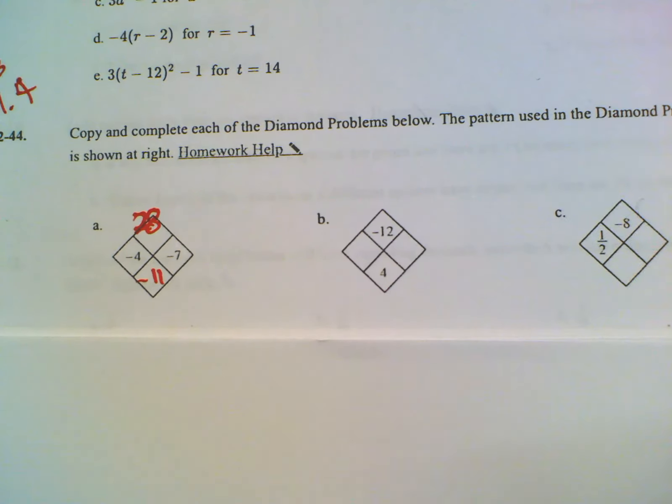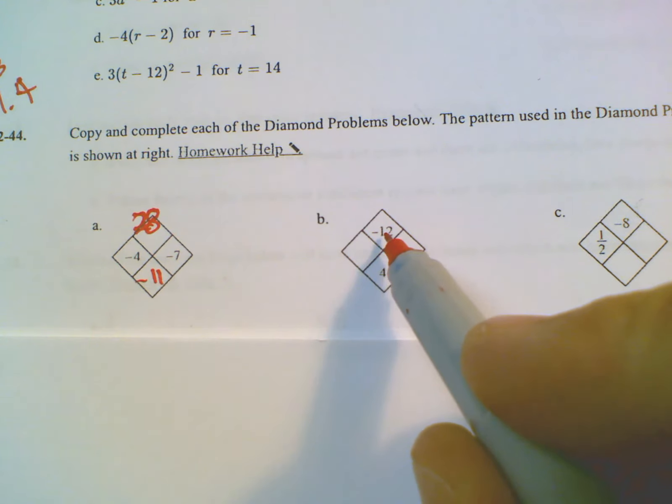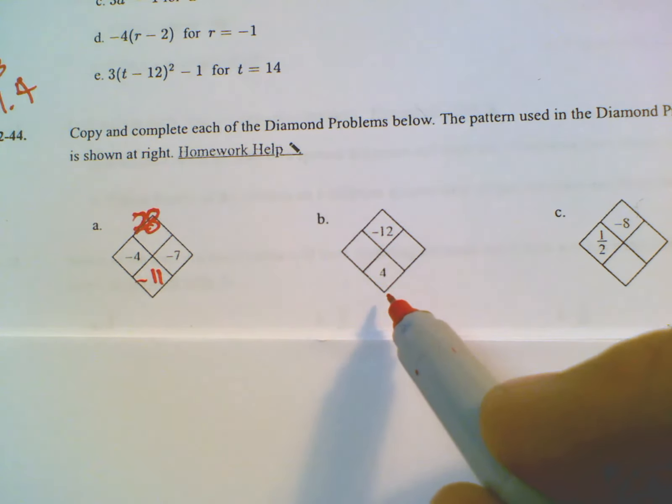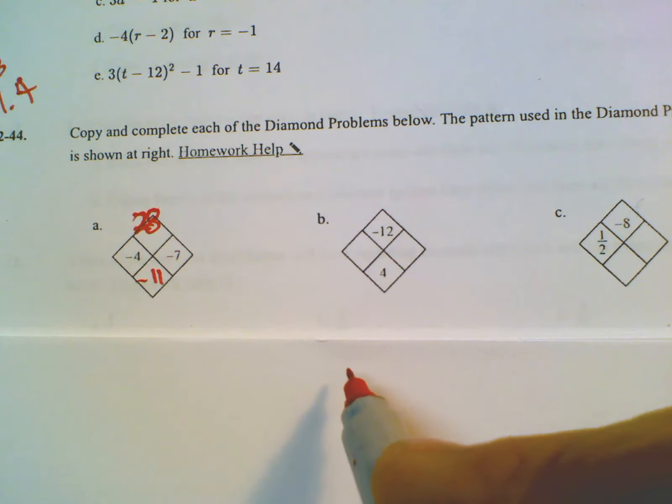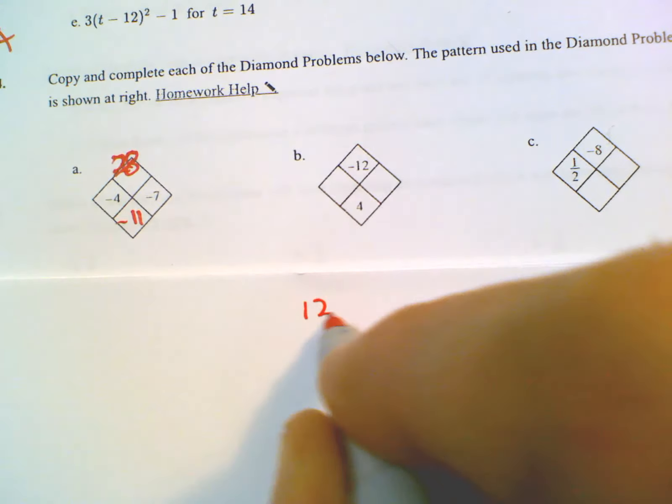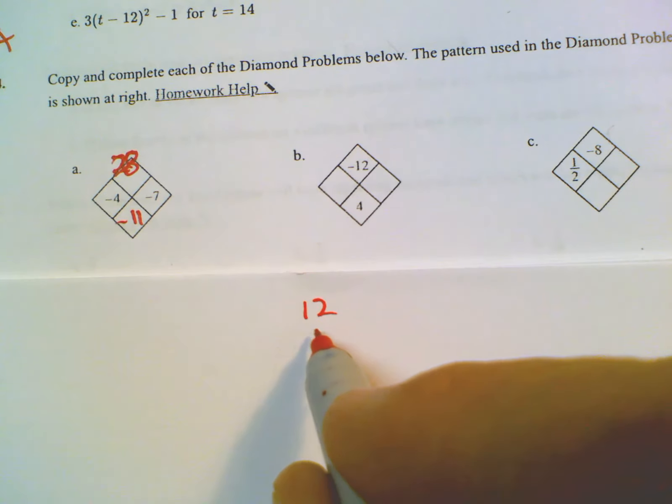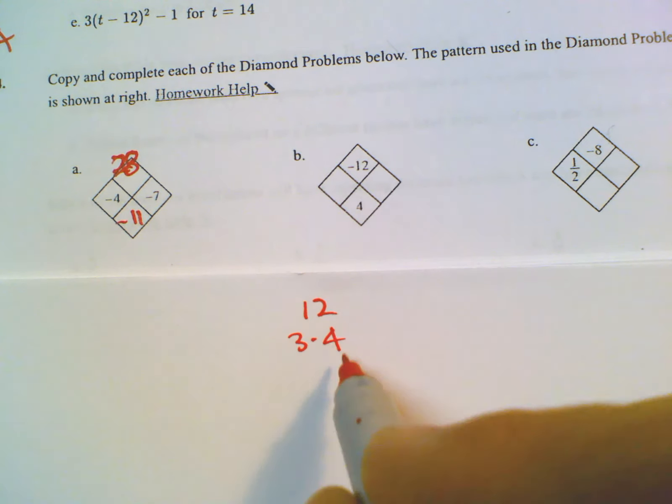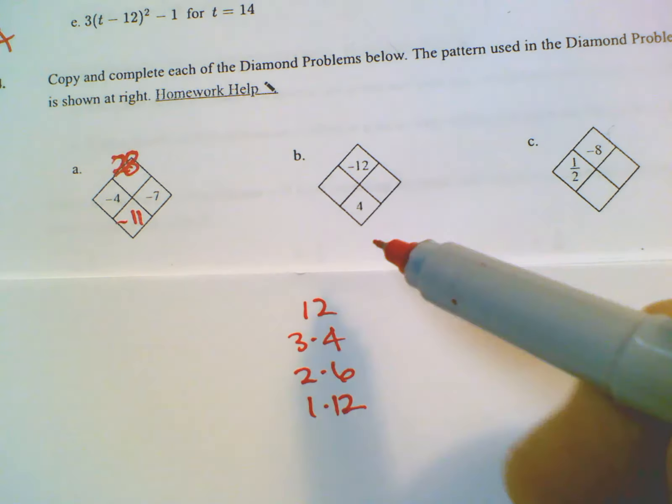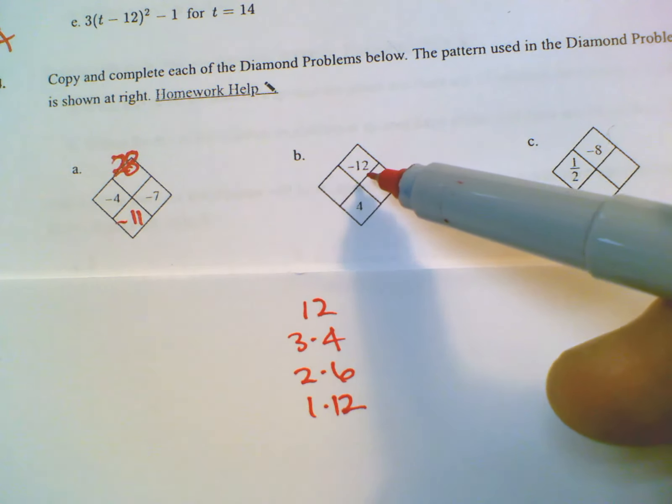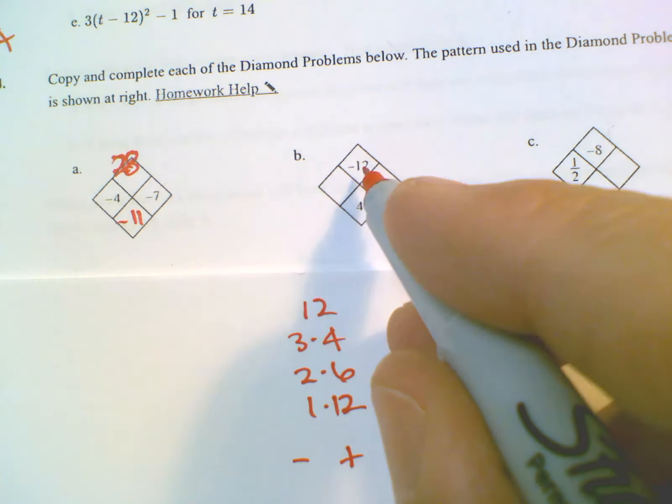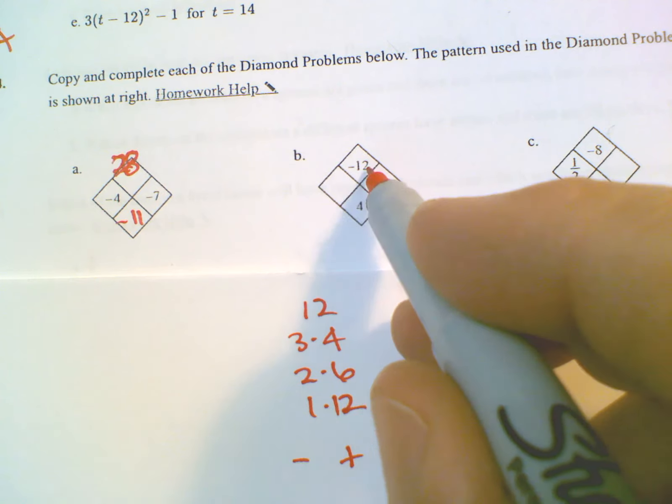Okay, and then in this case we've got two numbers that are going to multiply to be negative 12 but add to be positive 4. So one of the ways to look through this is you start with 12 and start thinking about all the combinations that multiply. What times what is 12? We know that three times four is 12, two times six is 12, and one times 12 is 12. And then think about if I have a negative on top, one of them has to be negative and the other has to be positive, because a negative times a positive is negative.